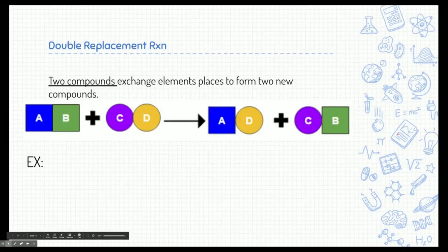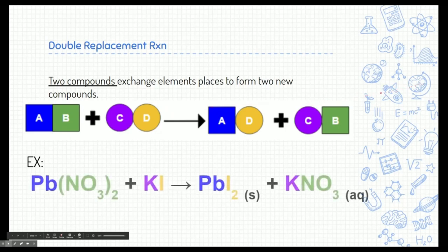Next is double replacement reaction. This is where we have two compounds. This is very similar to a single replacement reaction, but this time we have two dance partnerships. Here we have partners AB and here we have partners CD. And what they're going to do is they're just going to change up friends. They're going to change up partners. And A is going to go dance with D and C is going to go dance with B, always sticking to opposite charge.